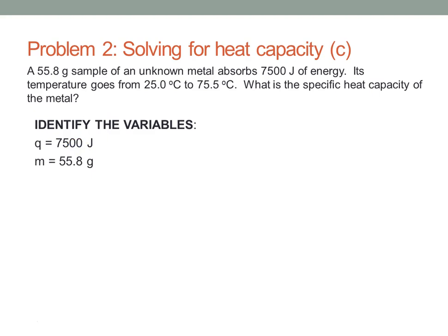The mass is 55.8 grams. C is what we're solving for, so it's a question mark. T1 is the initial temperature, 25.0, and T2 is the final temperature, 75.5. So our delta T is T2 minus T1, which gives us 50.5 degrees C.